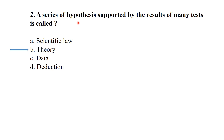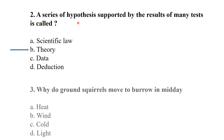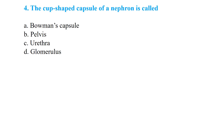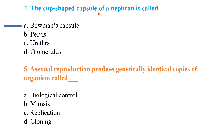Why do ground squirrels move to their burrow at midday? Normally they are cold, but in the midday heat they need to escape. The cup-shaped capsule of the nephron is called Bowman's capsule.